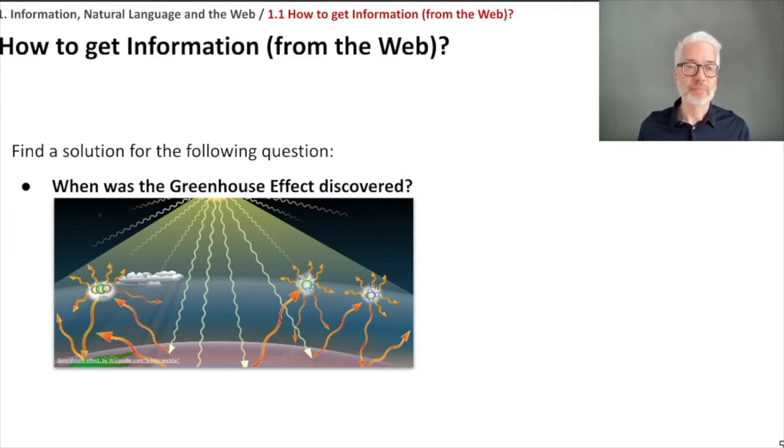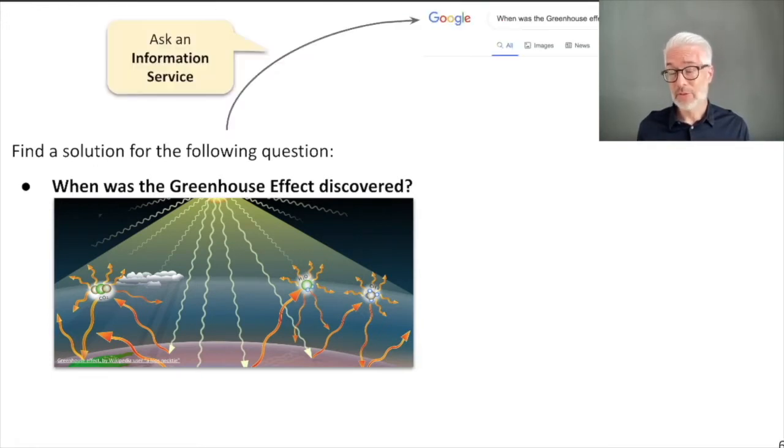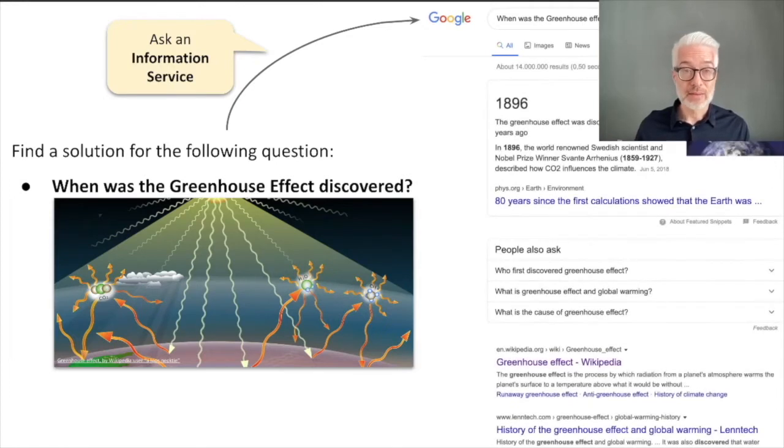Now the question we want to answer is: when was this greenhouse effect discovered? What you're going to do is ask your favorite search engine on the web, and this doesn't have to be Google. The nice thing about contemporary search engines is that you can pose questions in natural language. So we can simply type in the search string 'when was the greenhouse effect discovered' and ta-da, Google will give you an answer: 1896. The greenhouse effect was discovered more than a hundred years ago, and it tells you it was discovered by the Swedish scientist Svante Ahenius.